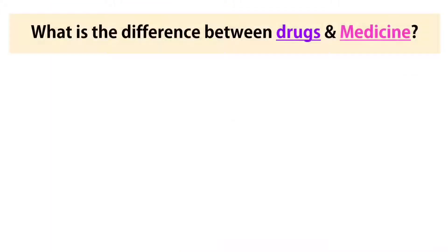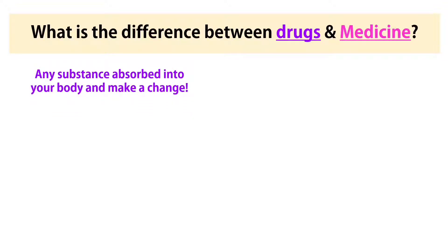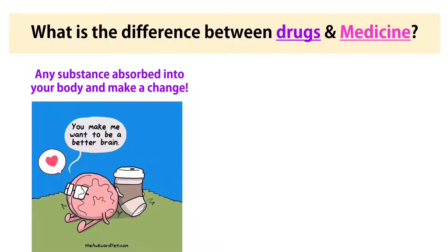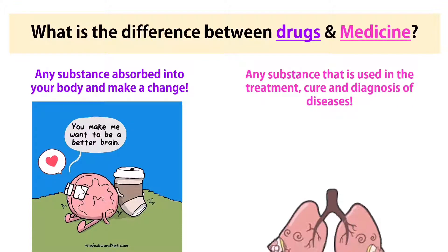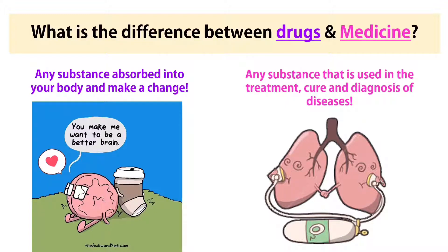Let's talk about drugs and medicine — what's the difference? Drugs are any substance absorbed into your body that makes a change. Coffee, for example — caffeine can alert your brain and act on your central nervous system, stimulating it, which makes you awake and less tired. Medicines are any substance used in the treatment, cure, and diagnosis of diseases. For example, oxygen can be used to treat, cure, and diagnose pulmonary diseases.